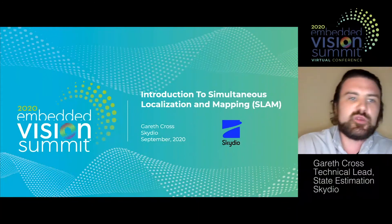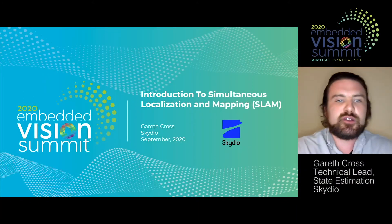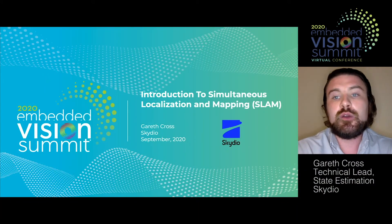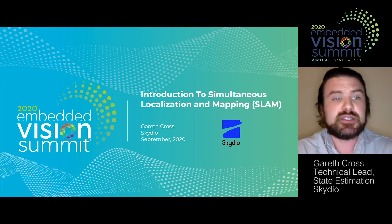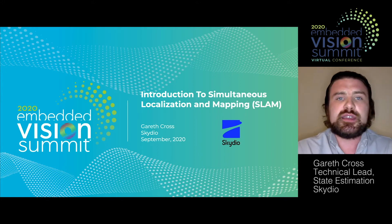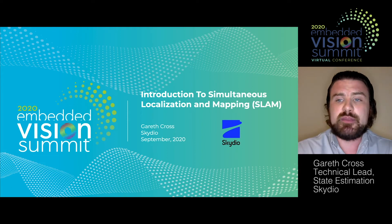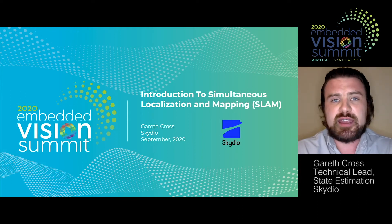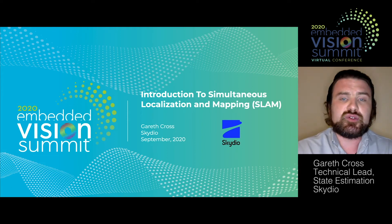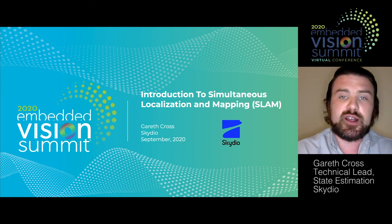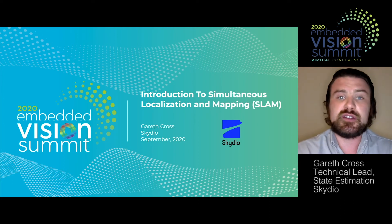Hi, my name is Gareth. Welcome to this introductory talk about simultaneous localization and mapping, or SLAM, as it is often abbreviated. This talk is intended as a high-level introduction. We're going to give an overview of what SLAM is, investigate a conventional visual SLAM pipeline as used with computer vision, and then look at some high-level design trade-offs that you might encounter in a SLAM problem.